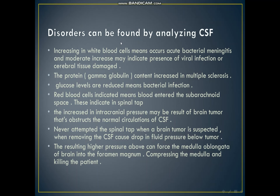These conditions can be found by analyzing cerebrospinal fluid. An increase in white blood cells indicates acute bacterial meningitis, where bacteria affect the meninges of the spinal cord or brain. An increase in lymphocytes may indicate presence of viral infection or cerebral tissue damage. If the protein gamma globulin is found to be increased in the cerebrospinal fluid, it may indicate multiple sclerosis.